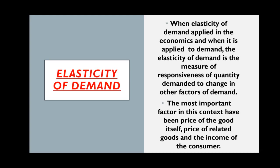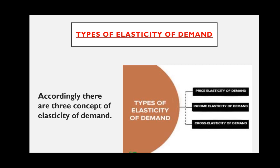Before starting the topic of income elasticity of demand, let's revise what elasticity of demand is. Elasticity of demand means the change in one variable due to change in another variable — how much change occurs in demand when other factors change. There are various factors that affect demand: first is the price of the commodity, second is the income of the consumer, and third is the price of related goods. Accordingly, there are three types of elasticity of demand: price elasticity of demand, income elasticity of demand, and cross elasticity of demand.